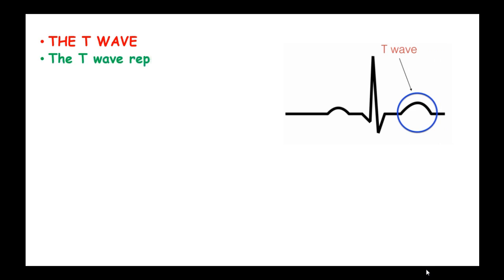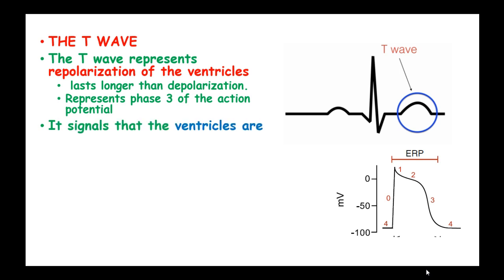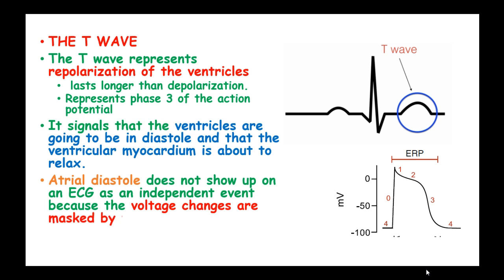The T-wave. The T-wave represents repolarization of the ventricles and it lasts longer than depolarization. This T-wave represents phase 3 of the action potential. The T-wave signals that the ventricles are going to be in diastole and that the ventricular myocardium is about to relax. Atrial diastole does not show up on an ECG as an independent event because the voltage changes are masked by the QRS complex.